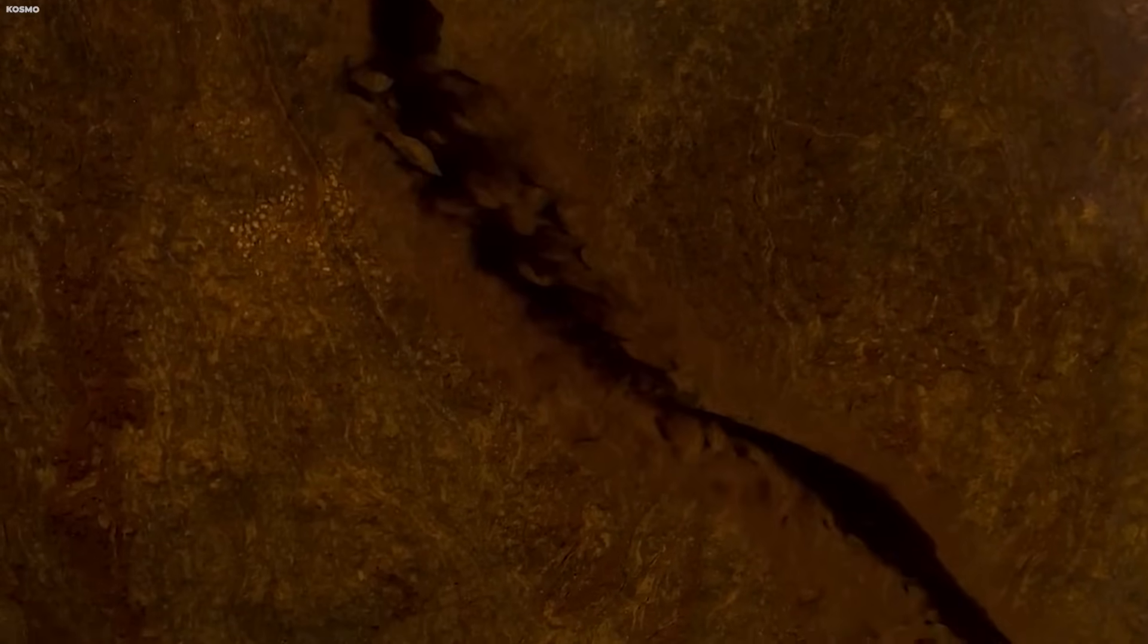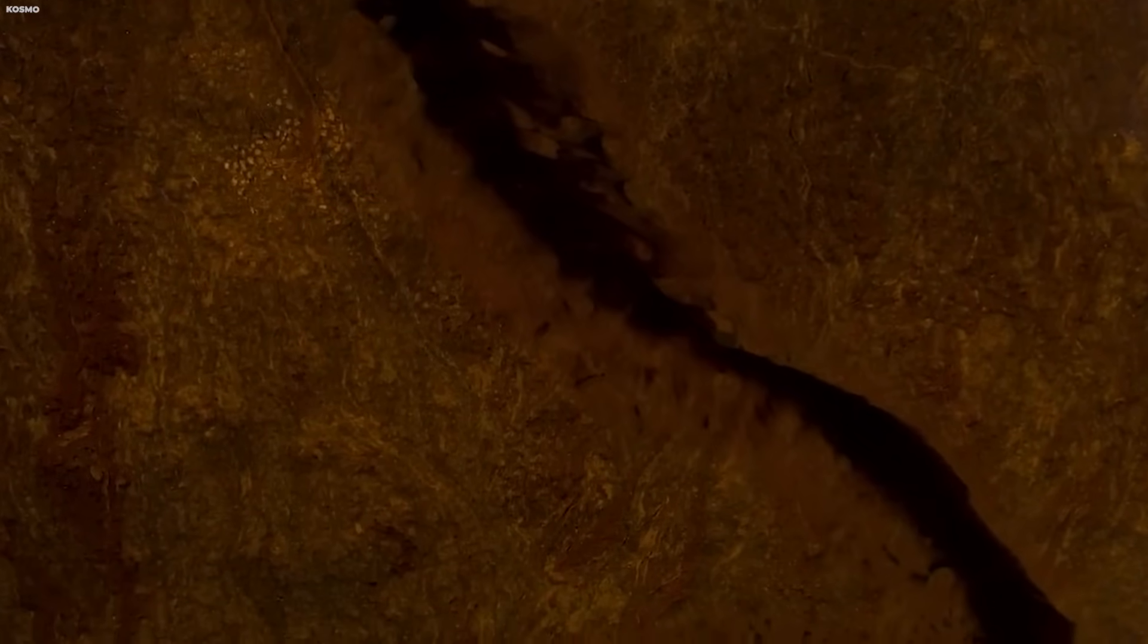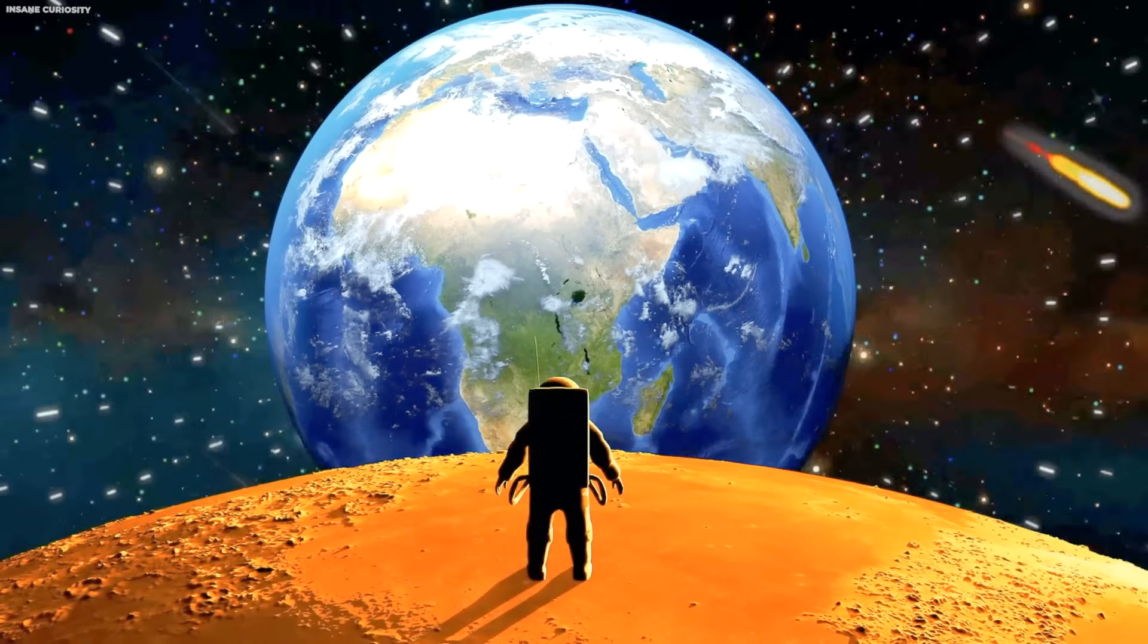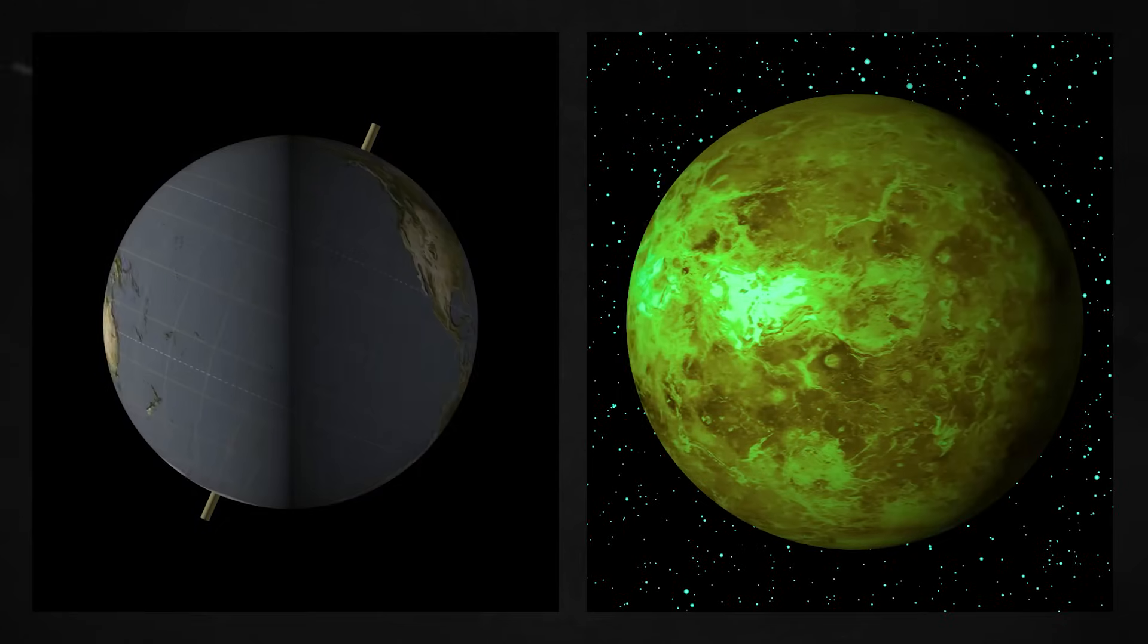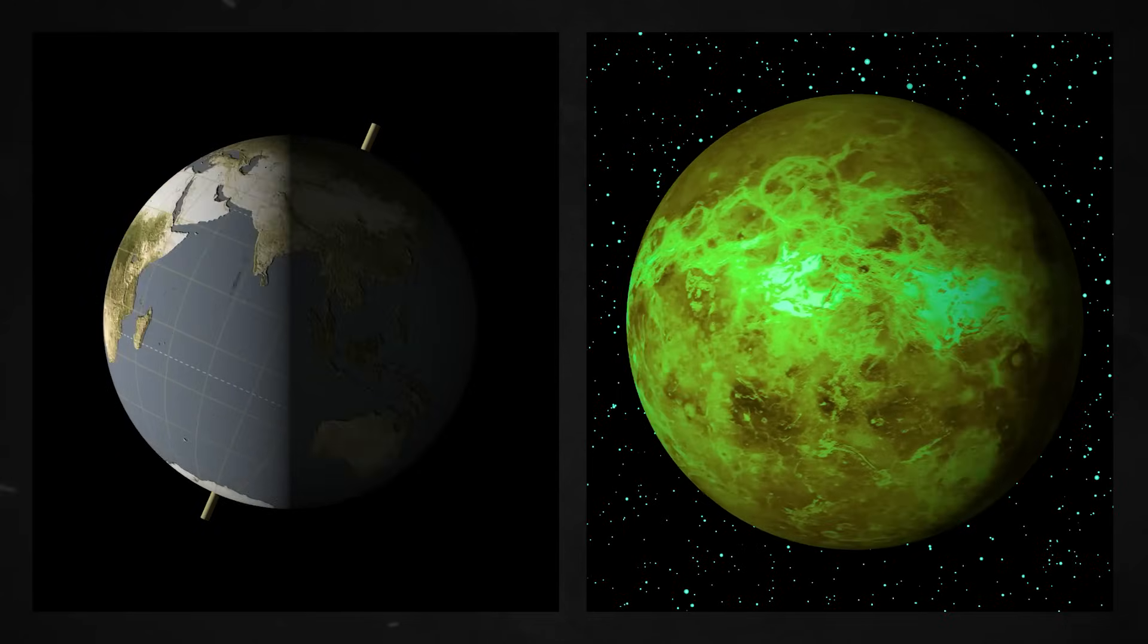Venus may have had oceans similar to Earth's billions of years ago when it was cooler and wetter. It's plausible that Venus may have supported life in the distant past, but something went terribly wrong. Venus and Earth once had many similarities despite their vast differences now.